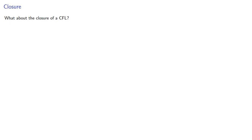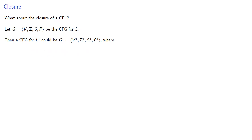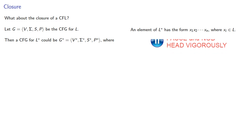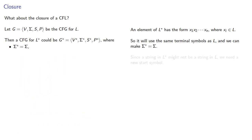What about the closure of a context-free language? We'll let the four-tuple G be the context-free grammar for our language. A context-free grammar for the closure requires figuring out the new variables, terminal symbols, start symbol, and production rules. An element of the closure has the form X1, X2, ... where each Xi is part of the original language. This means the closure uses the same terminal symbols, so we keep them the same. Since a string in the closure might not be in the language, we need a new start symbol.